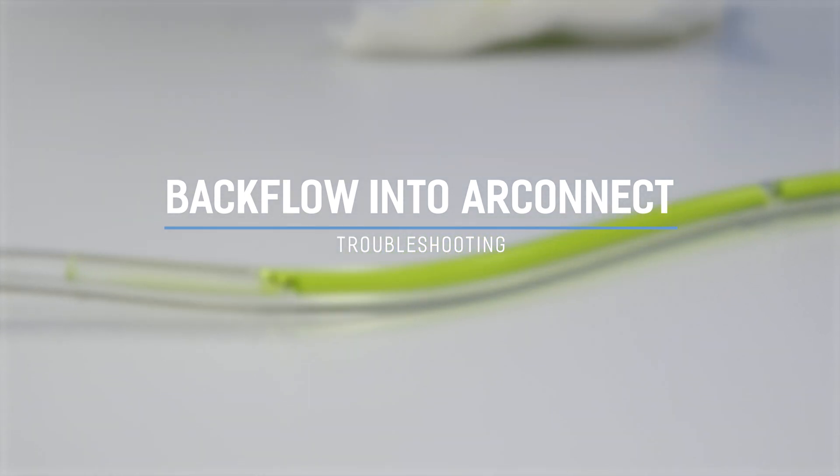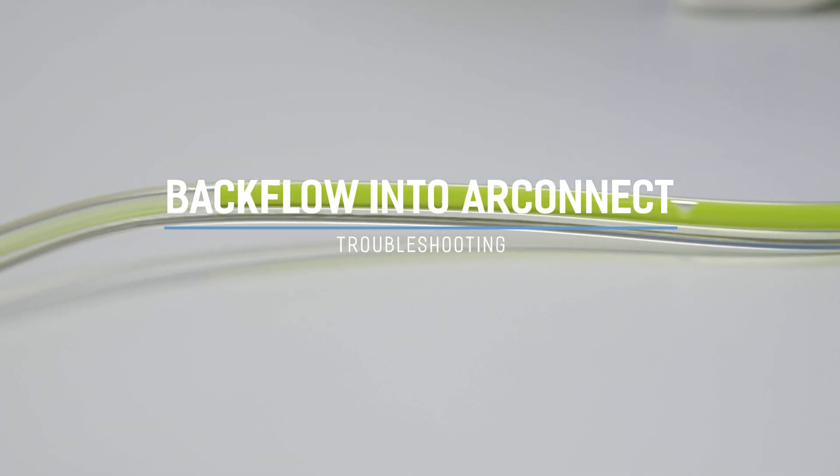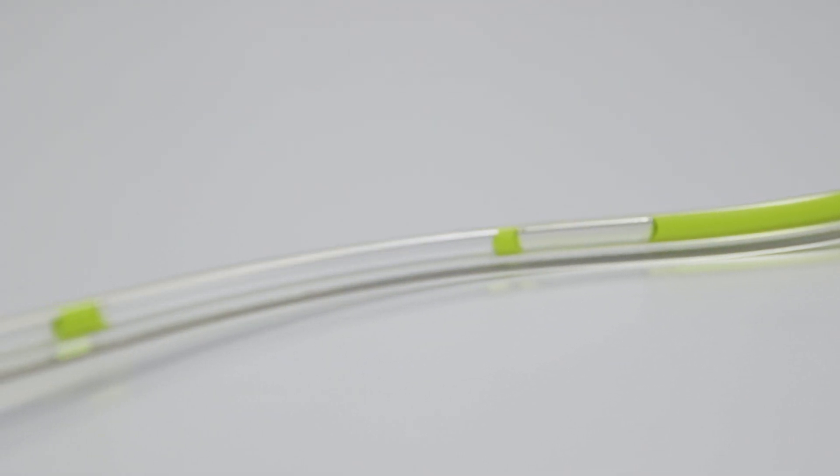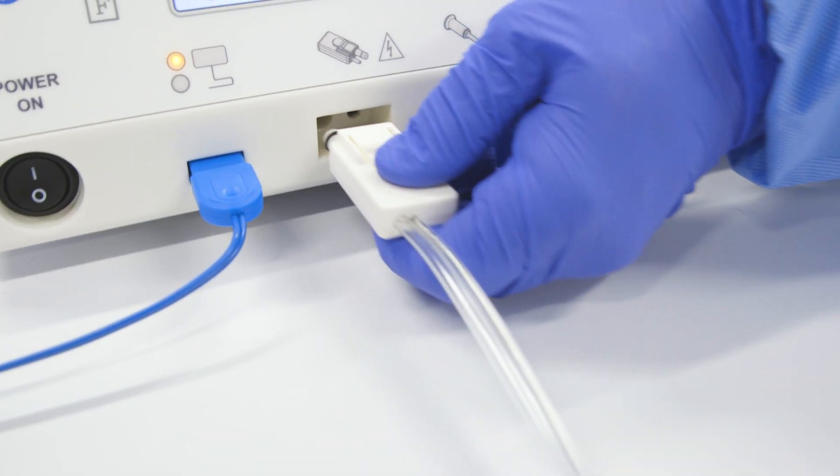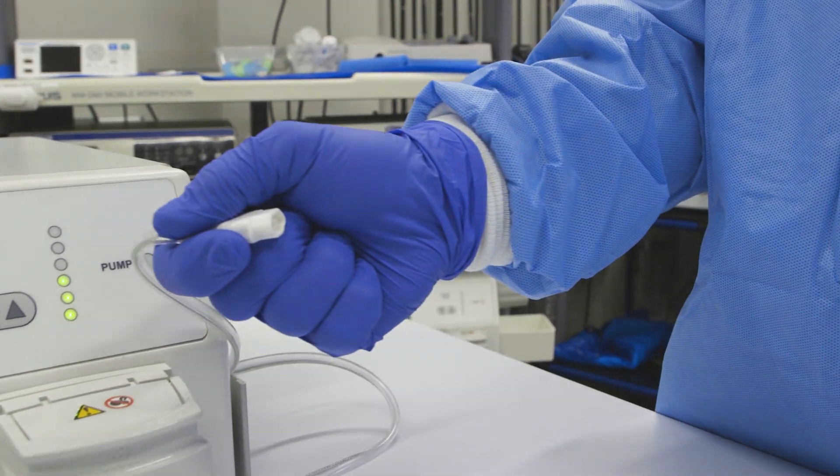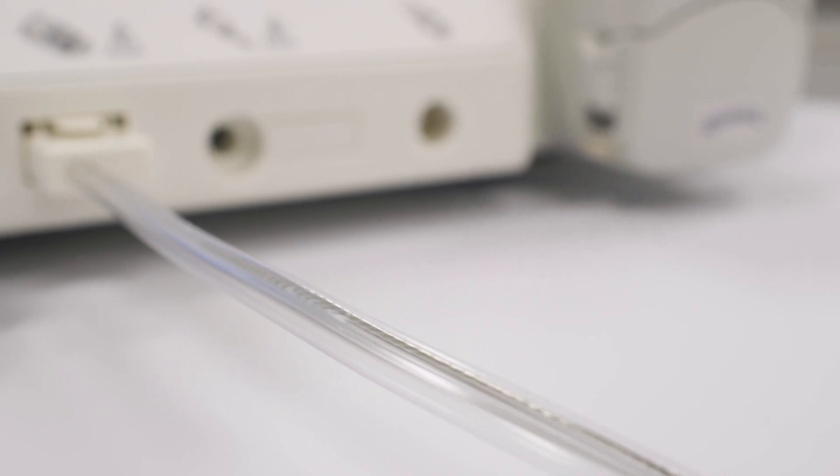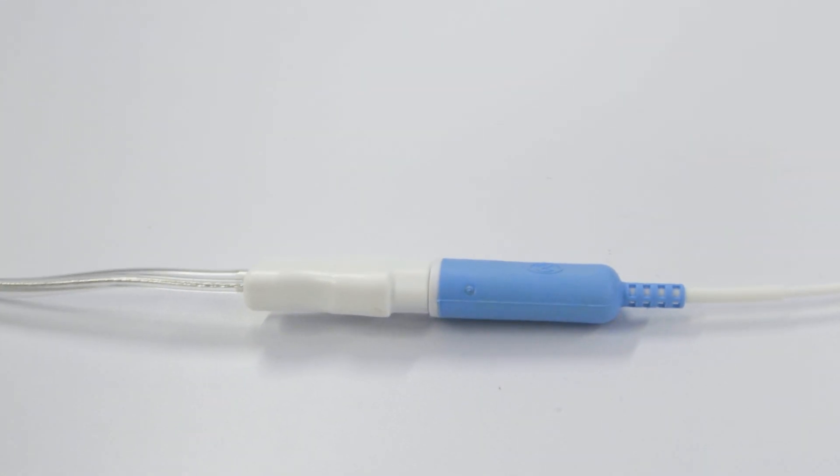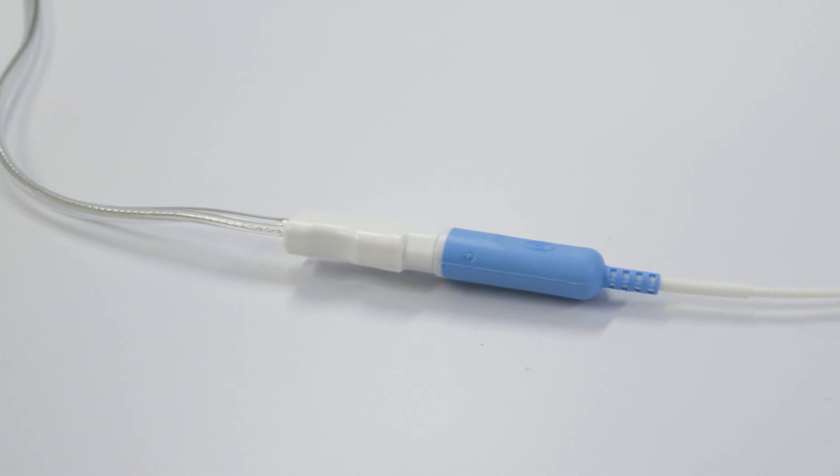Backflow into the ArcConnect receptacle. To prevent backflow into the GI-4000, avoid disconnecting the ArcConnect argon probe connector or the argon coagulation probe from the GI-4000 until the procedure is complete. The positive pressure system will constantly flow argon through the ArcConnect receptacle to the probe as long as they remain connected.